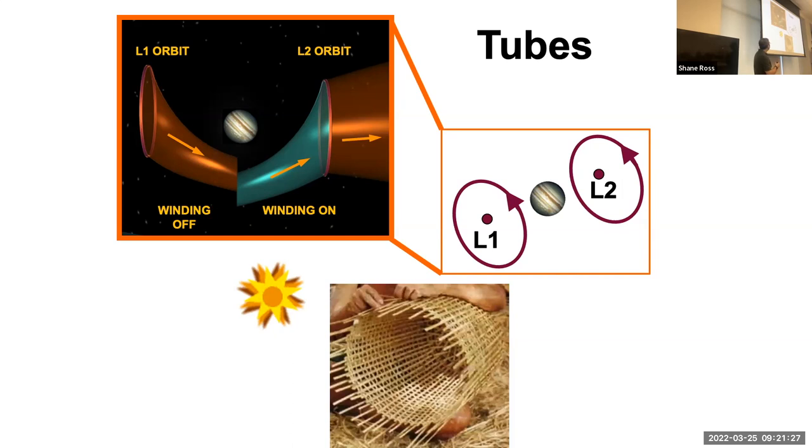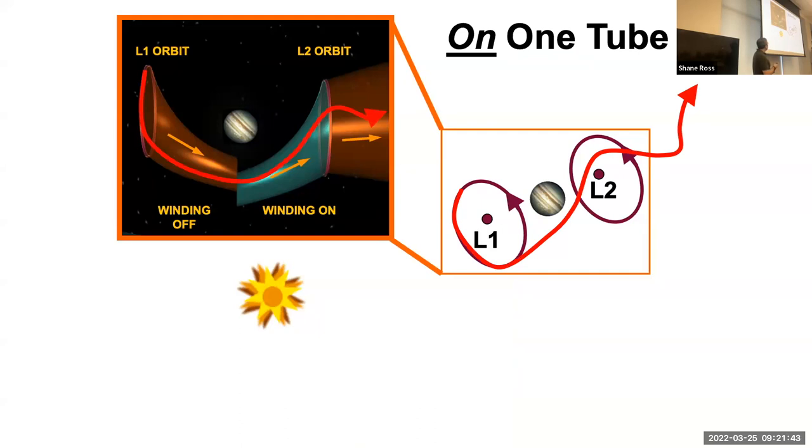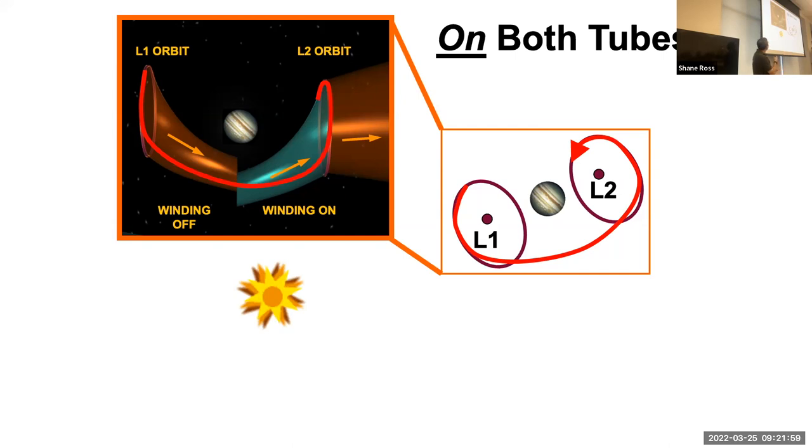When I say these are tubes, they're actually tubes made up of individual trajectories. Imagine a basket made up of individual fibers. Here the fibers are trajectories, and they're all either winding onto or winding off of an orbit. You could have trajectories on one of the tubes. I'm showing schematically something winding off the L1 periodic orbit, passing by Jupiter and going through this L2 tube. You could have trajectories that are on both tubes. These are called heteroclinic, a fancy word that means it goes from one thing to another, and it doesn't use any fuel at all. They're very fragile, but they do exist.